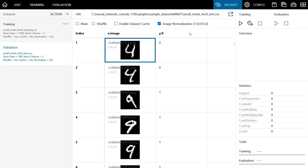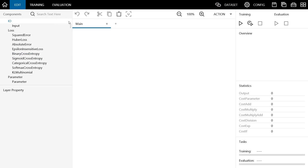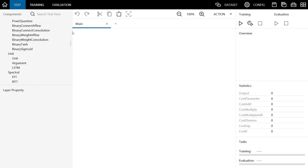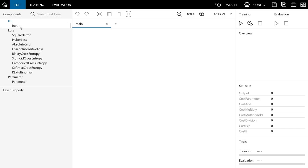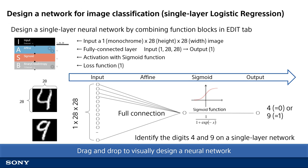Next, we will design the neural network. To design the neural network, use the Edit tab here. In the Edit tab, you can find various functions in the Components section, and you can combine these functions to design the neural network. The neural network to be designed this time will be a single-layer logistic regression, which was also present in the sample project. Logistic Regression can be composed of these four functions: input, affine, sigmoid, and binary cross-entropy. If you want to know how to construct a neural network by combining functions, please see the video 'Basics of Designing Neural Network' for a detailed explanation.